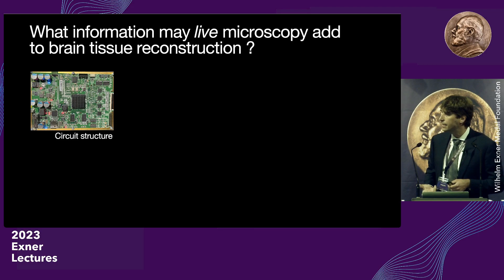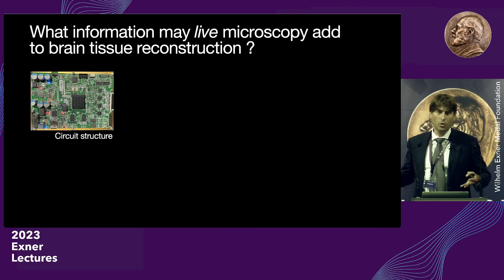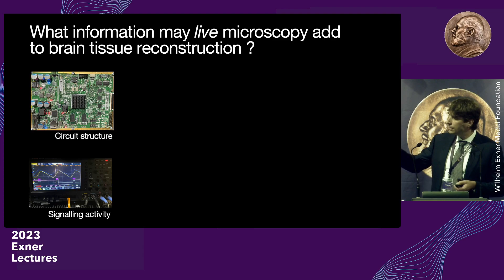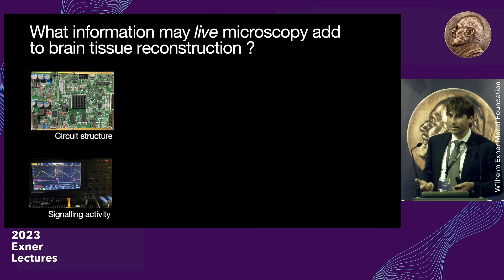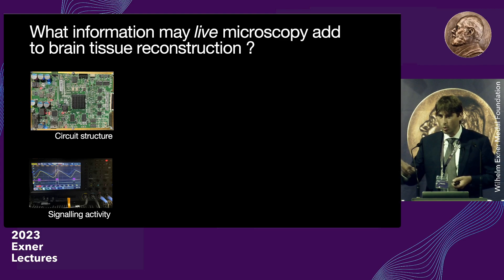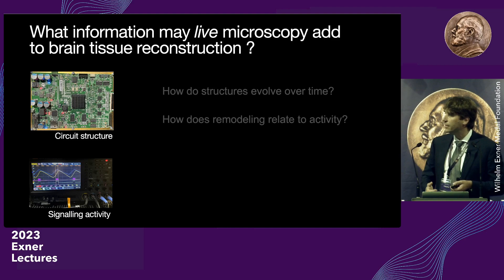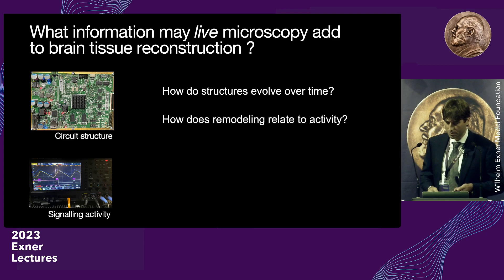If we liken the brain to an electronic circuit, we can ask: what may we want to extract? Obviously, we want to know how it's wired up — the structure of the circuit. But in addition, we want to know what the signaling activity is and how it relates to the structure. Where this analogy immediately breaks down is that the brain constantly modifies its structure. It's a very dynamic organ, and with light microscopy we may be able to ask how these structures evolve over time and how remodeling relates to activity.